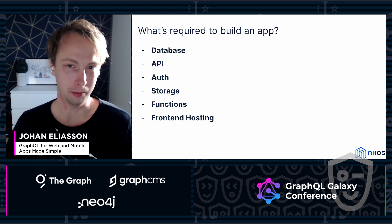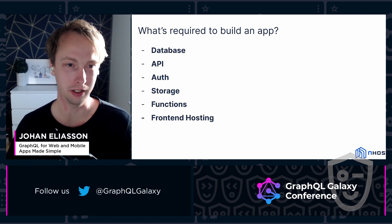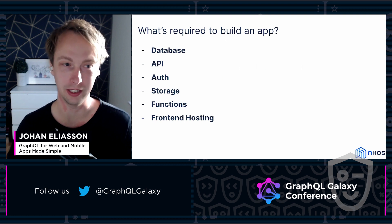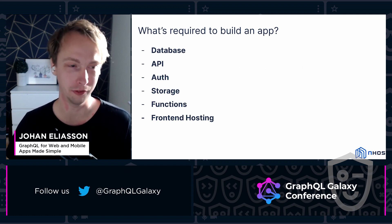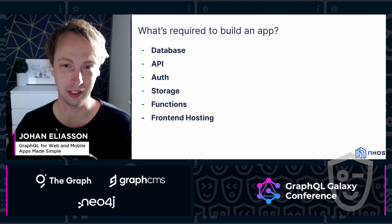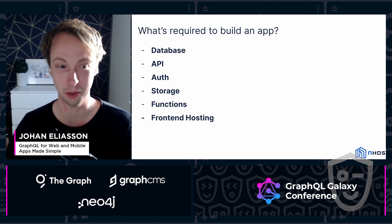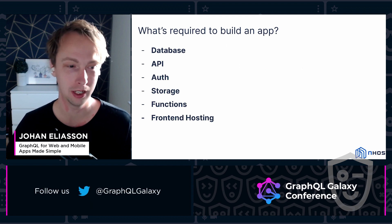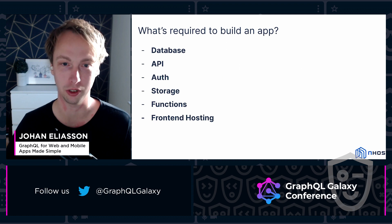Almost every app has some variation of this that they need. They need a database to store some information, an API to send information back and forth — that's preferably a GraphQL API — authentication to sign in users, storage to upload funny cat pictures, functions to run some custom code, and if it's a web app, you probably need some kind of front-end hosting as well.